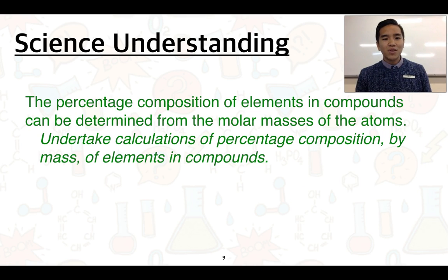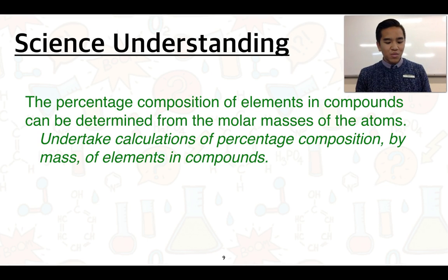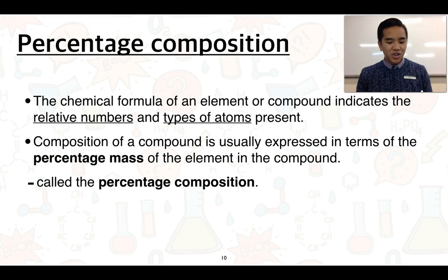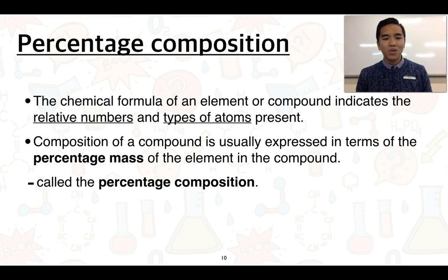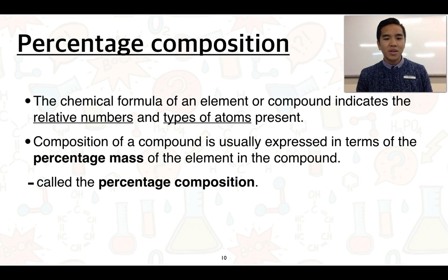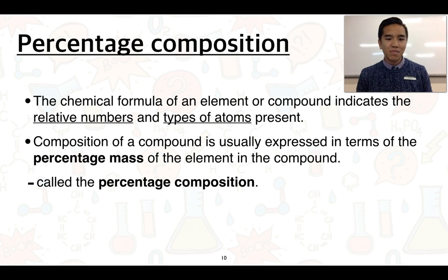The second part of this video looks at determining percentage composition of elements in compounds, and how we can use molar masses of atoms to determine that. The composition of a compound — otherwise known as the percentage composition — is usually expressed in terms of percentage mass. The actual number of atoms doesn't indicate what percentage of the mass they may actually make up.